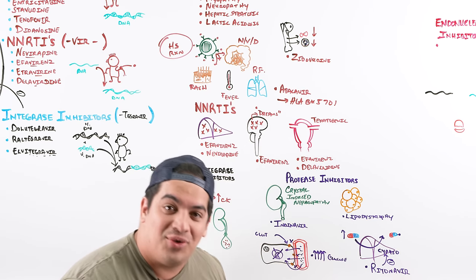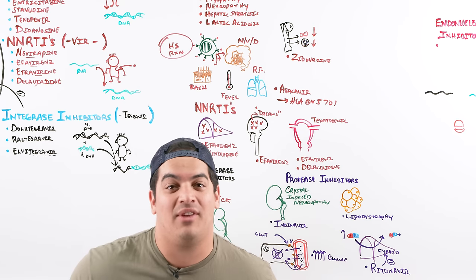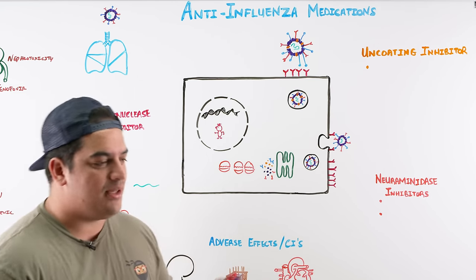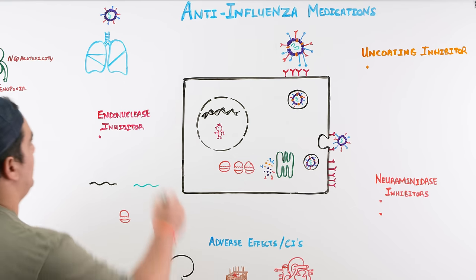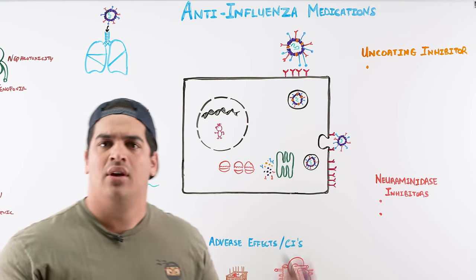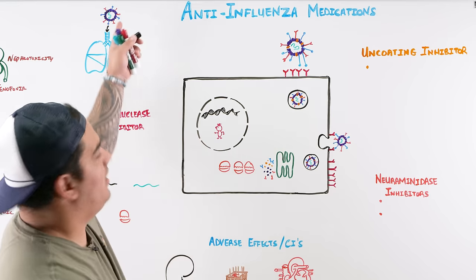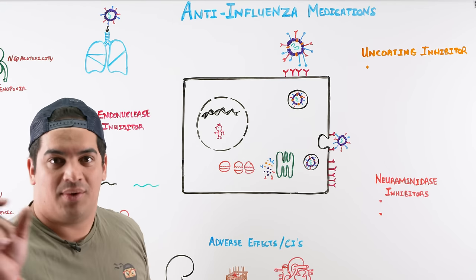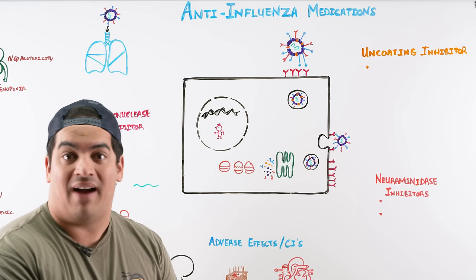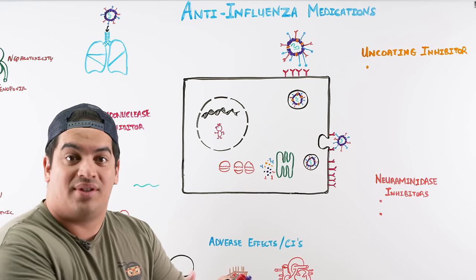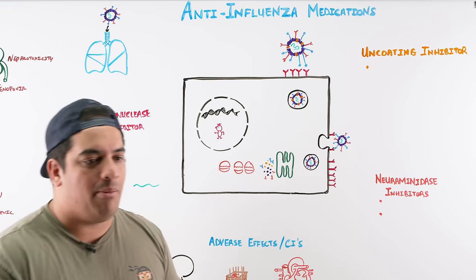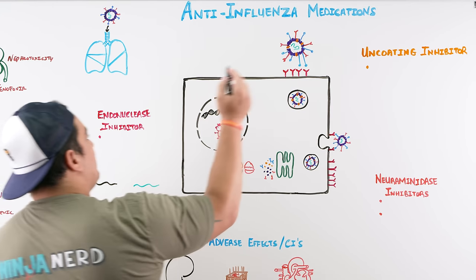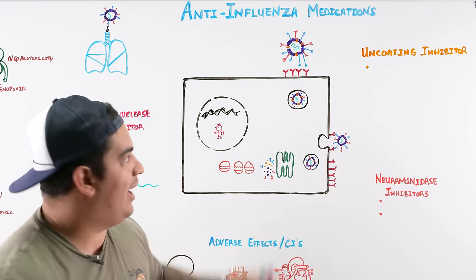Now we'll cover influenza medications. Influenza spreads via respiratory droplets and infects the respiratory tract. The influenza virus binds to respiratory epithelial cells and uses them to replicate. Understanding its life cycle helps identify drug targets.